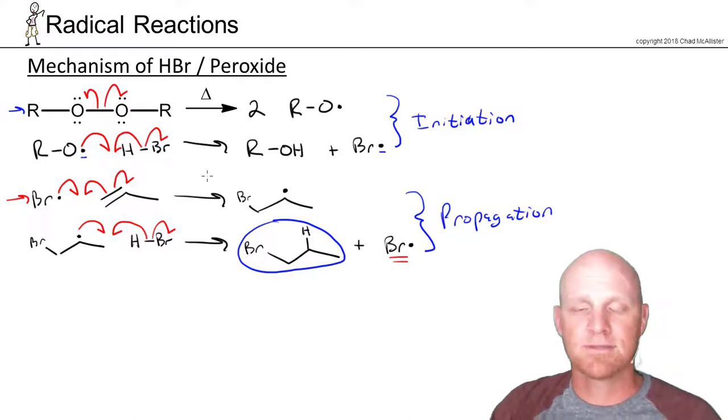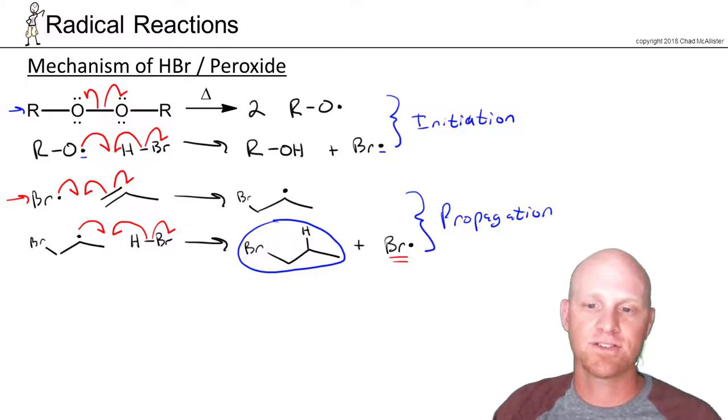And again, same thing as before, I'm not going to show the termination steps here. But if any two radicals meet, that's going to be a termination step. And whether it be two carbon radicals, two bromine radicals, whether some alkoxide radicals get involved in stuff like this, don't care. They're on your handout and stuff like that, but I'm not going to take the time to go over them in the video here. But again, any two radicals meeting, that is termination.